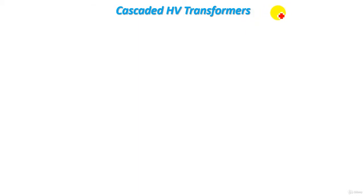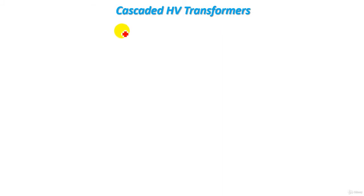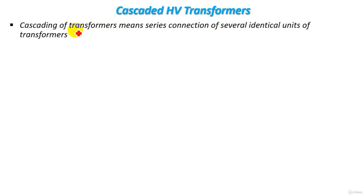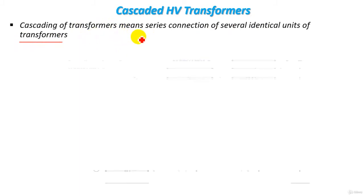Hello guys. This lecture will be about understanding the operation of cascaded high voltage transformers for producing high voltage AC greater than 300 kilovolt. As explained before, a single unit high voltage transformer cannot be used to produce voltage greater than 300 kilovolt due to insulation problems and erection problems, so we use cascaded high voltage transformers. Cascading of transformers means connection of several identical units of high voltage transformers. Let's see the operation, construction and circuit of cascaded high voltage transformers.